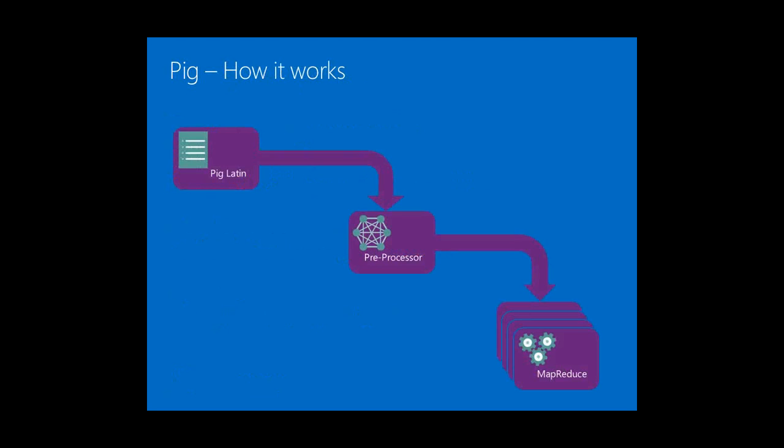How this works under the covers: what you just saw is referred to as Pig Latin — we're writing script. That script goes into a pre-processor, which optimizes it and produces one or more MapReduce jobs. How many MapReduce jobs and what those jobs look like are 100% dependent on the script you write. It is possible — as with almost any technology — to write bad or inefficient script that produces inefficient MapReduce jobs. So we want to pay careful attention, and there are techniques to see what's going on under the covers. Pig Latin is essentially a layer of abstraction for MapReduce that does the heavy lifting for us.